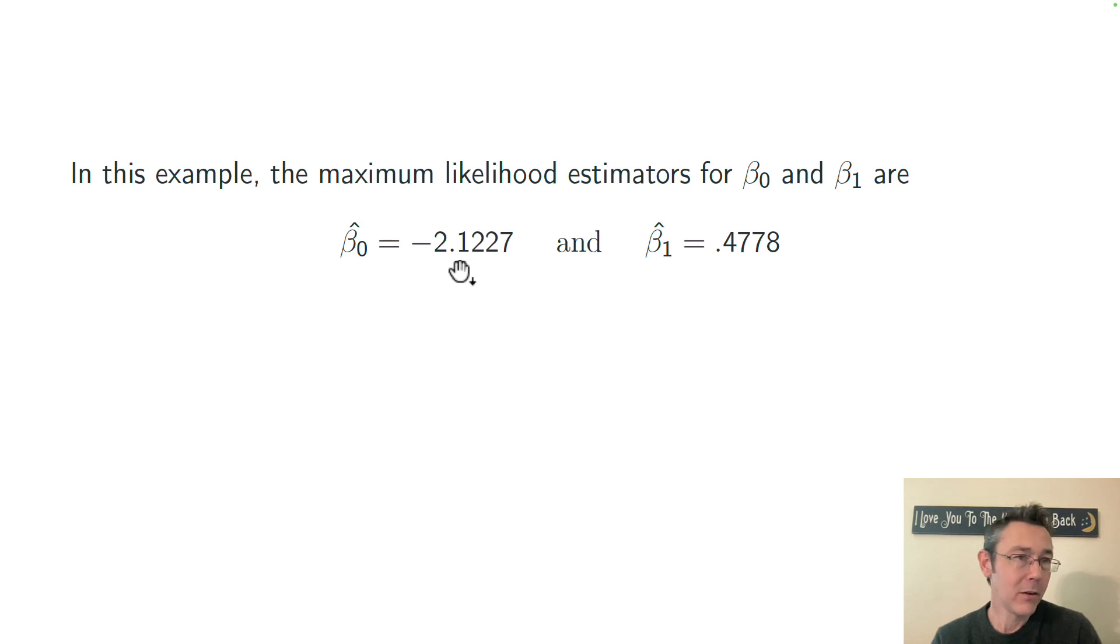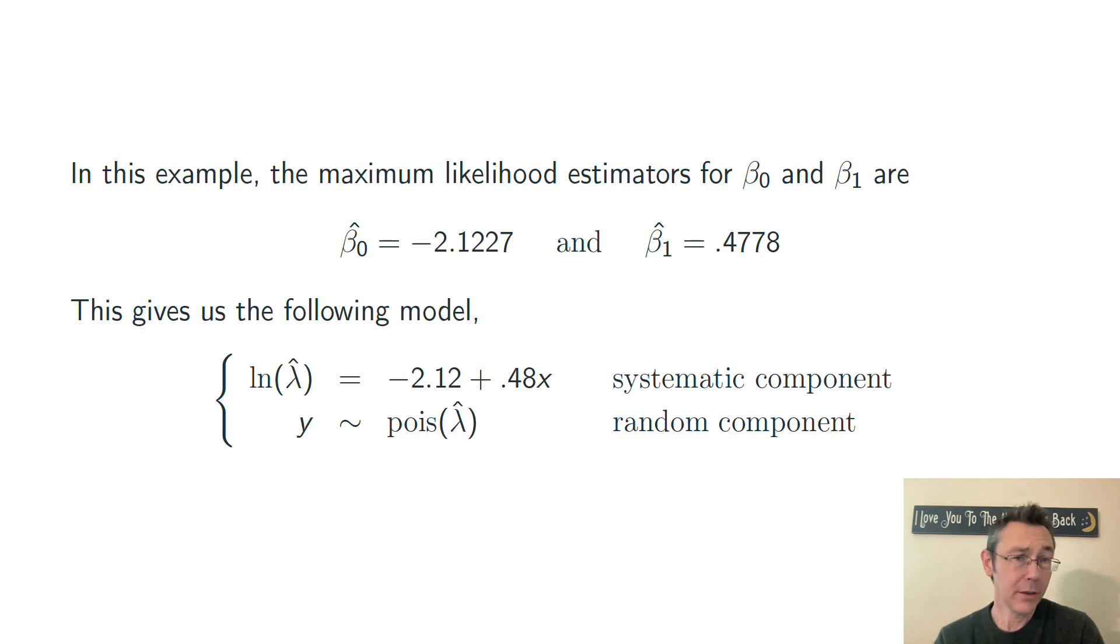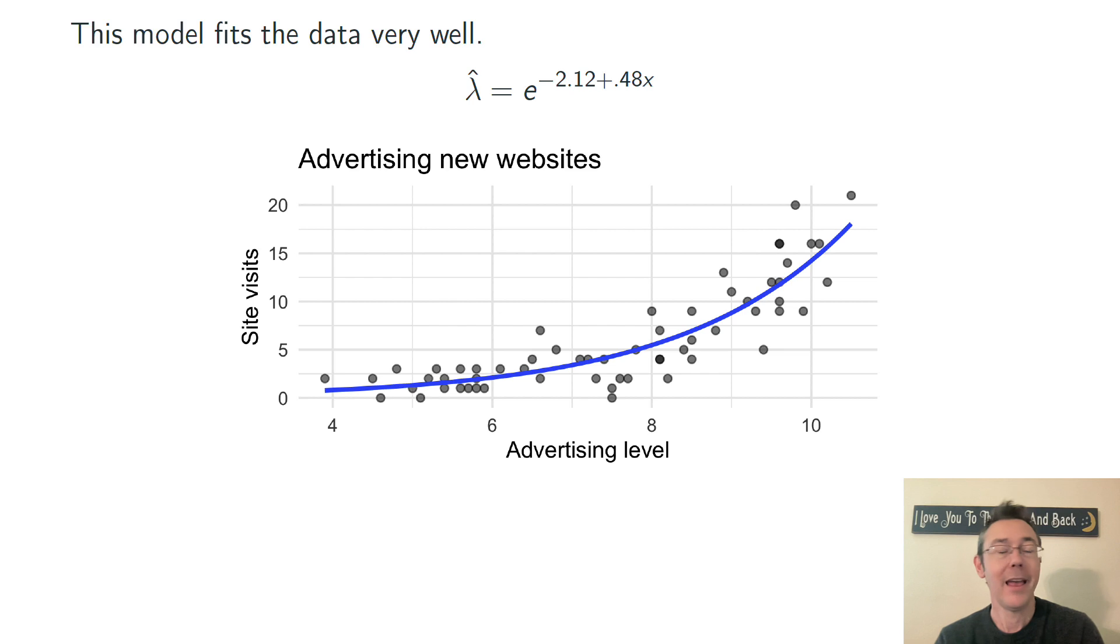In this case, we get estimators for those coefficients: beta 0 is negative 2.12, beta 1 is 0.478, as I saw in that last slide. So we can plug those into our model and get this, just literally plugging in those numbers. And if we plot it, we get a really nice-looking trend here that seems to capture the trend of the data really well. Up here at the top when I've written the equation for that trend line, I've put it in that exponential form where I've taken the exp of both sides.